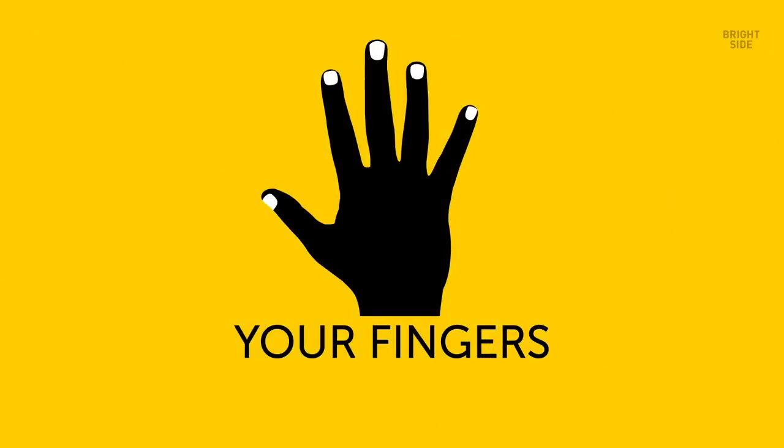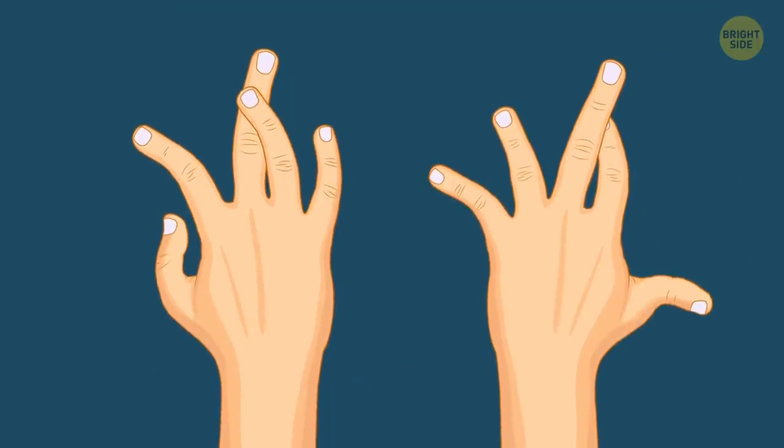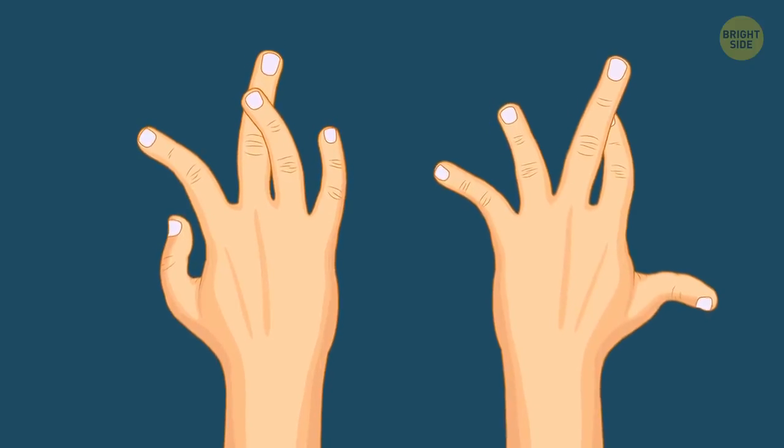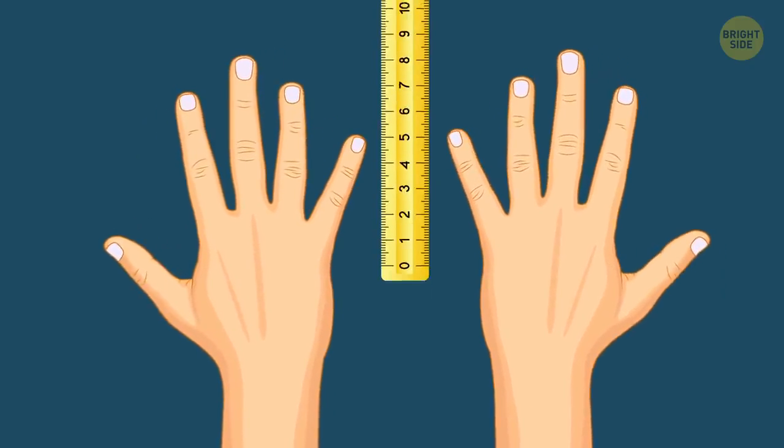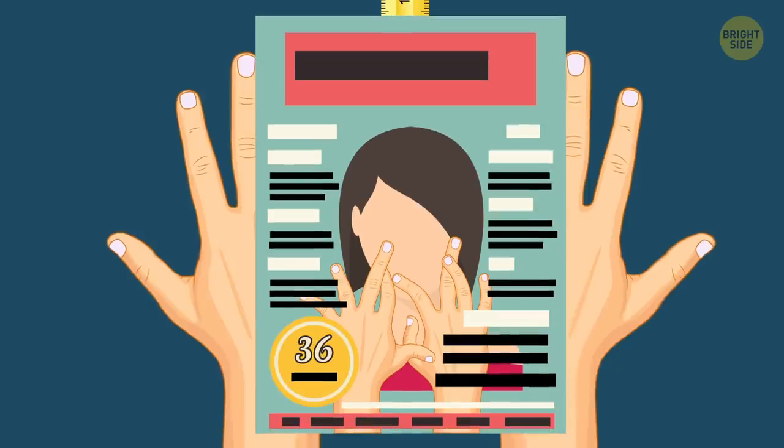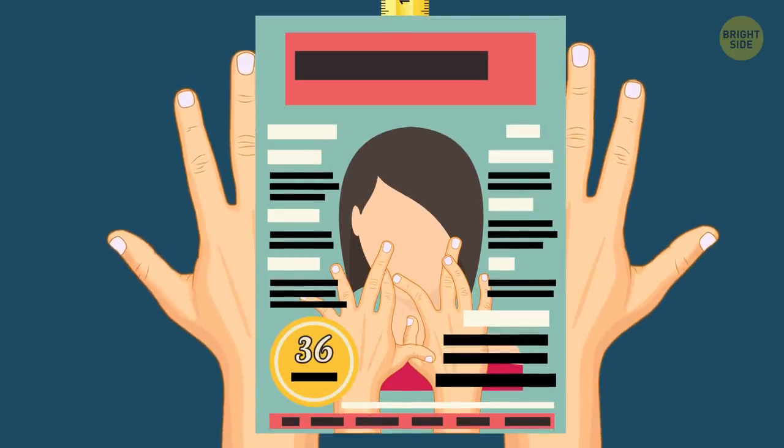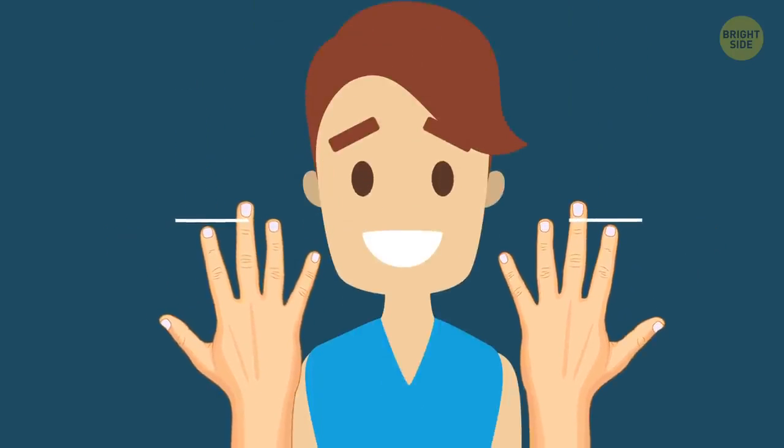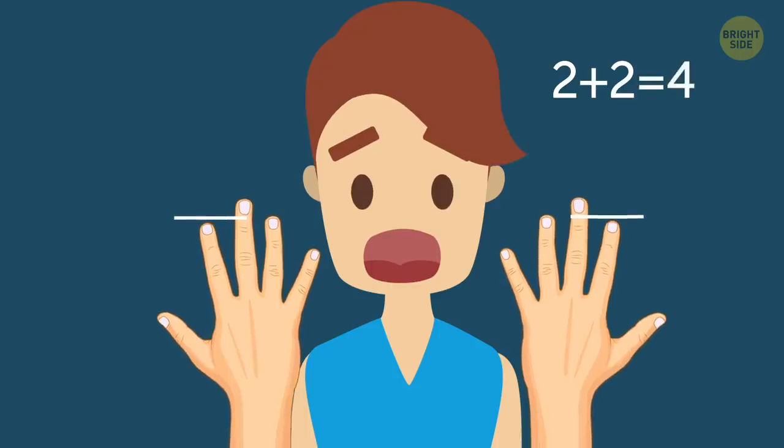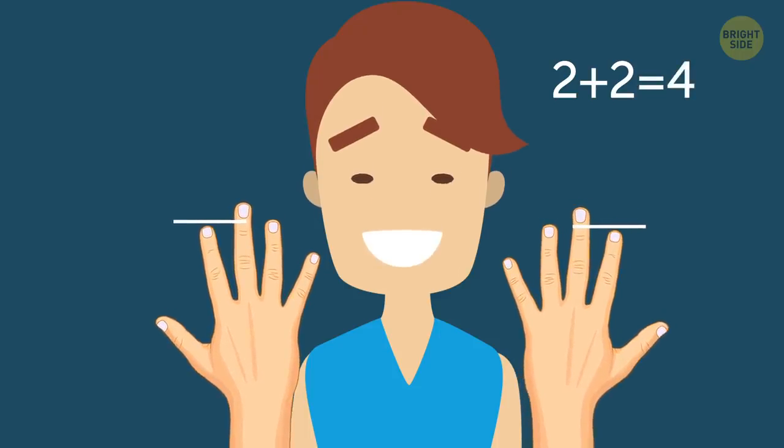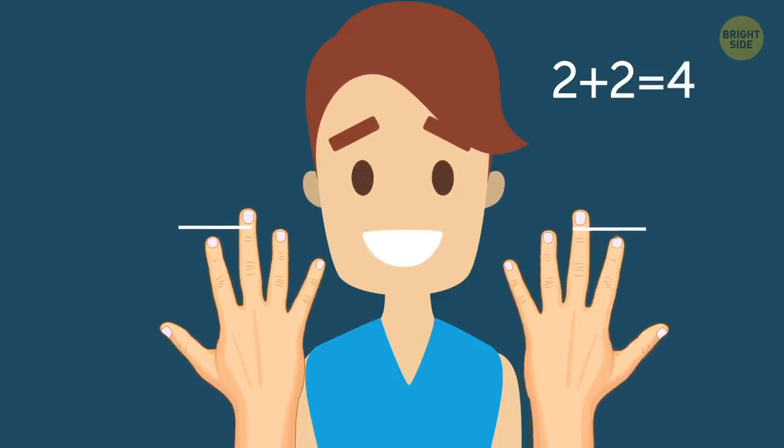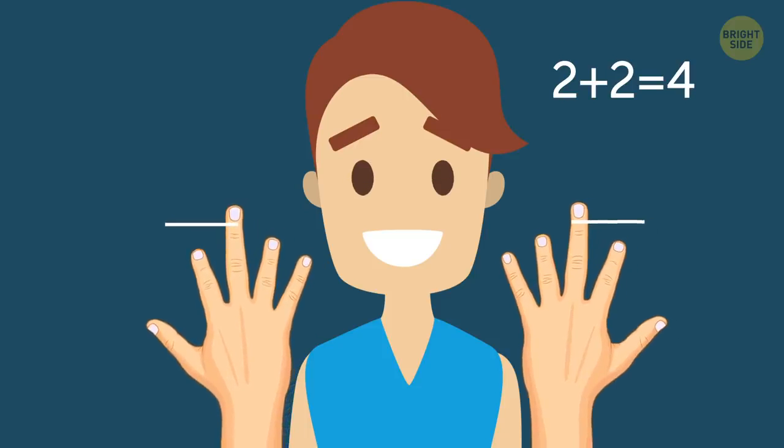Your fingers. Remember how I told you that finger asymmetry is a signal of a bright mind? Well, it's actually connected to their length. A study that was published in the British Journal of Psychology claimed that boys with smaller index fingers are generally better at math. For girls, it's a little bit different, though. You have to have smaller index and ring fingers to be considered smarter.